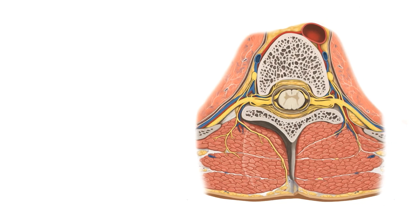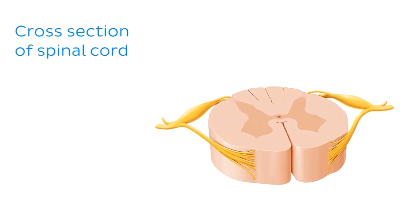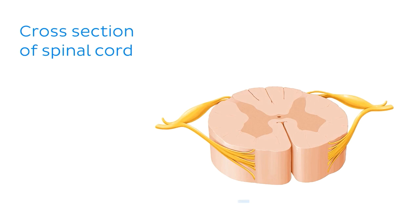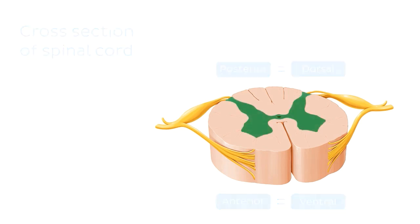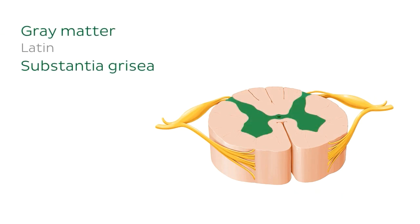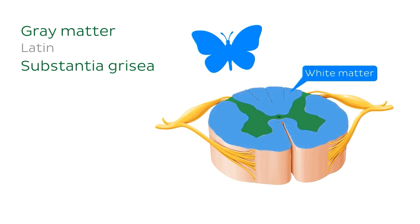Let's take a closer look at the cross-section of the spinal cord. We have the anterior aspect here, and over here we have the posterior aspect. You'll also often encounter the terms ventral and dorsal, which mean anterior and posterior respectively, especially in relation to spinal cord structures. You've obviously already identified the grey matter due to its distinct butterfly-like shape, and as you can see, it's surrounded by the white matter.